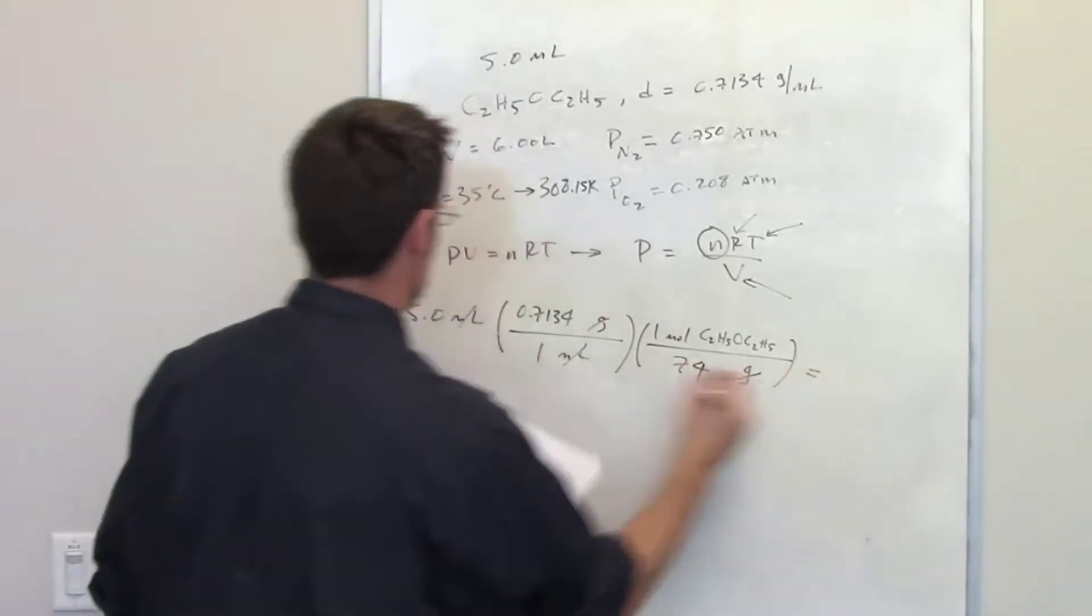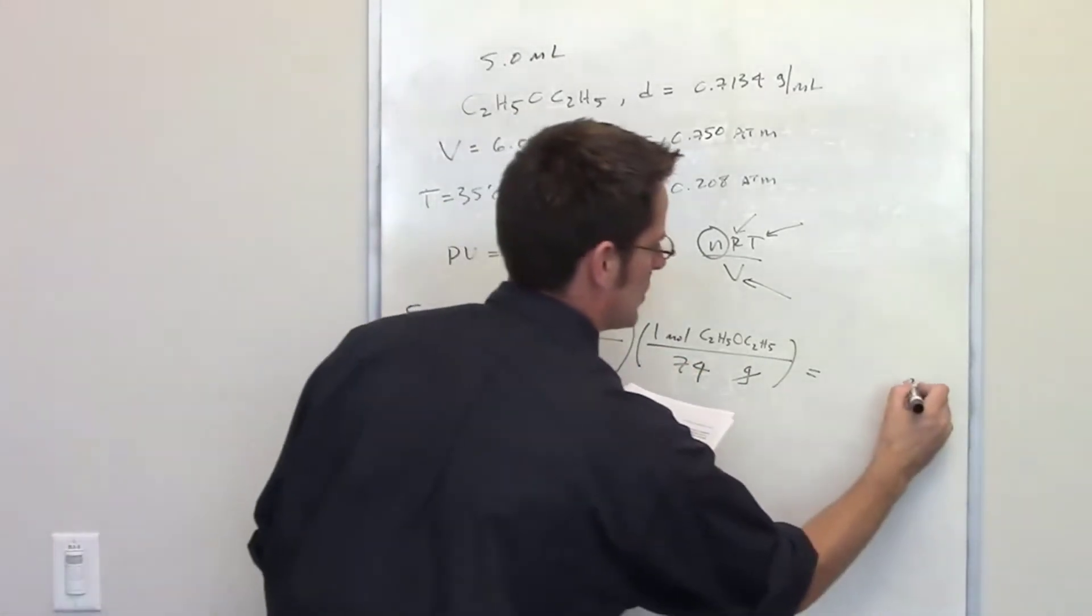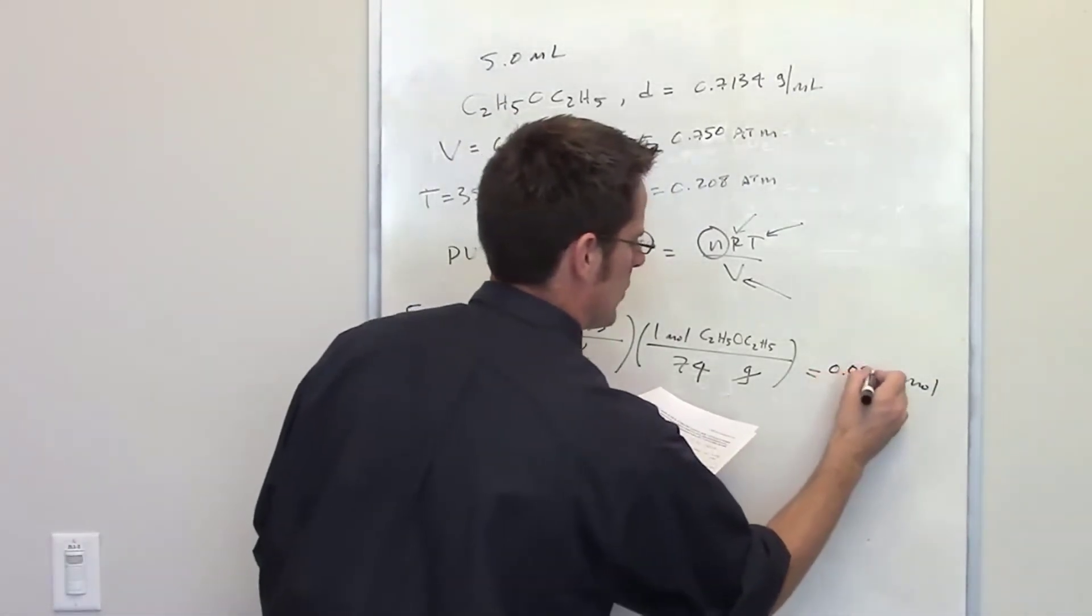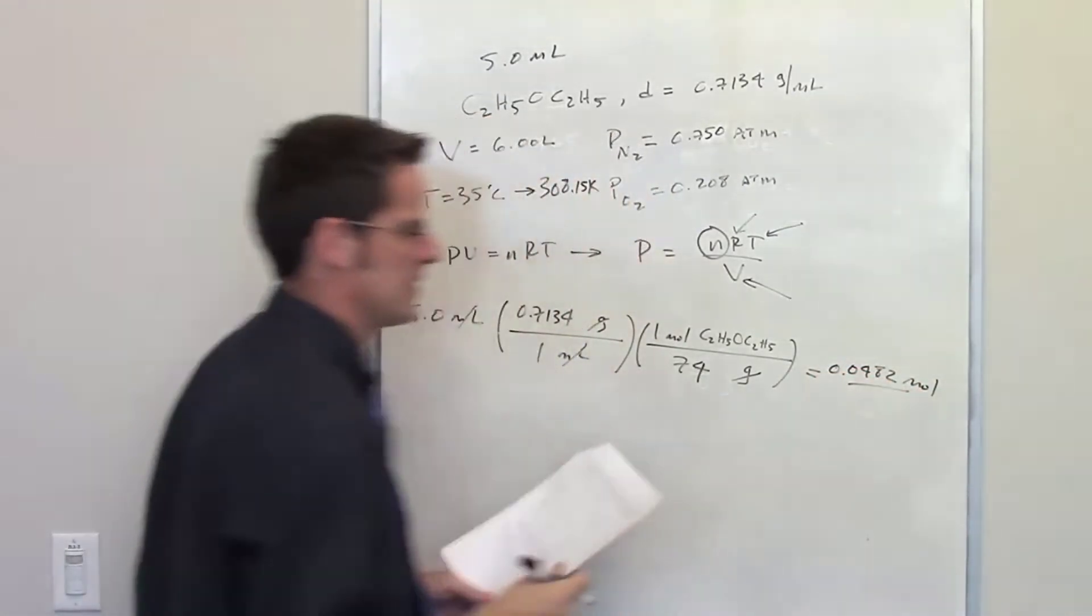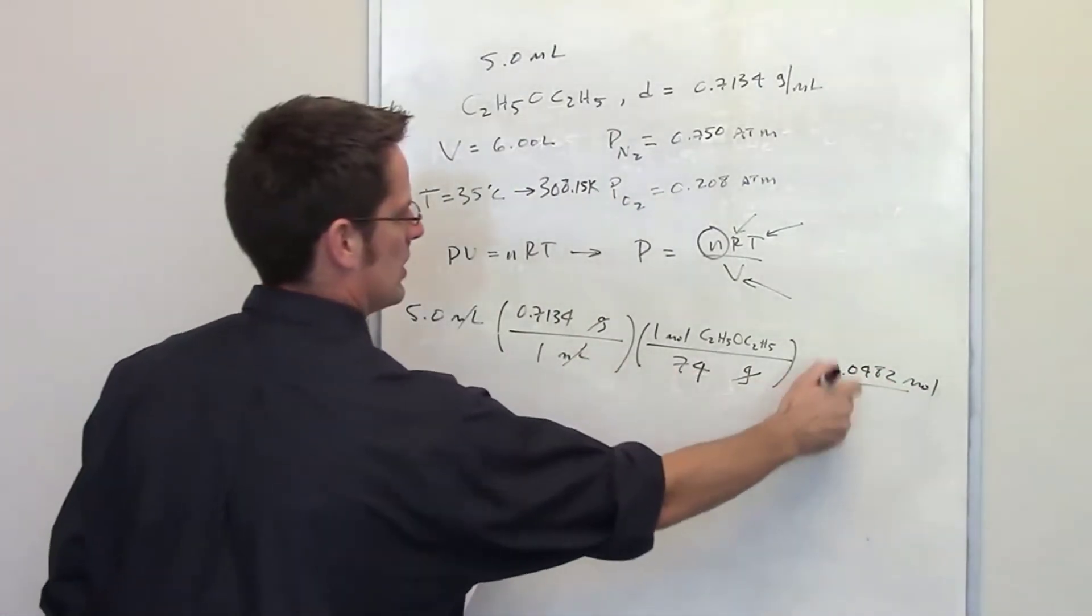The grams cancel each other out and I now have used this value and this density to determine the total number of moles of diethyl ether that we've actually thrown into this system is 0.0482 and I'm kind of throwing sig figs under the rug for right now. So I now have n the total number of moles.